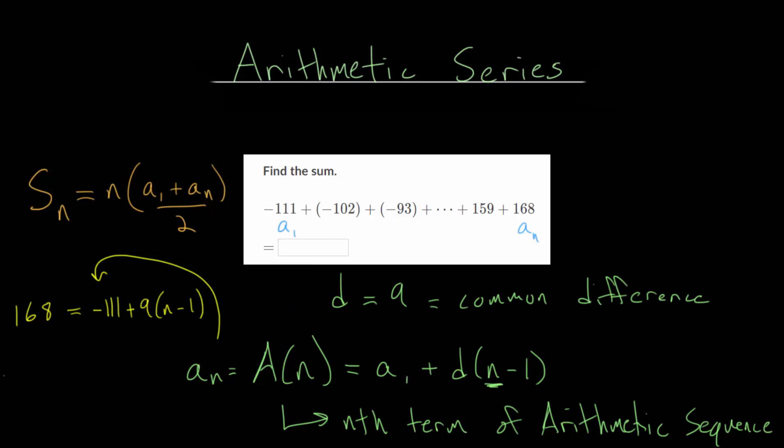168 plus 11 would be 179, plus 100 would be 279. This is equal to 9 multiplied by n minus 1. Let's divide each side by 9. 9 goes into 27 three times, there's no remainder. 9 goes into 9 one time. So you get 31 is n minus 1. And just adding 1 to the other side, you find out that there are 32 terms.